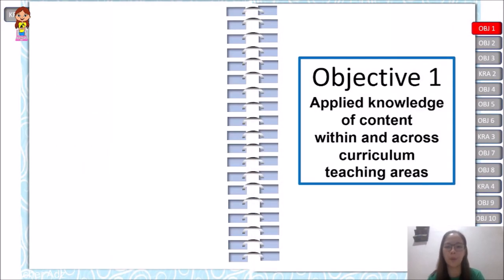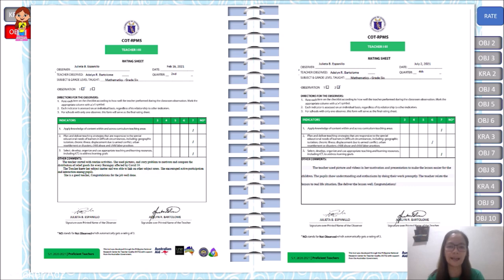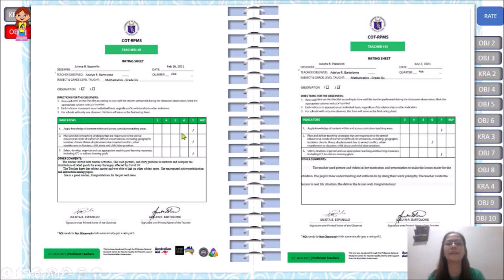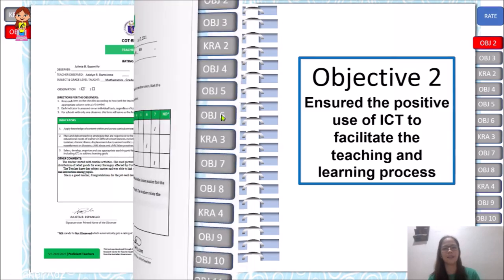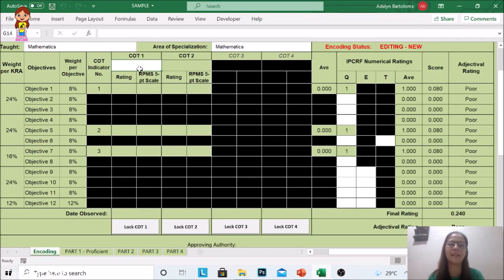For objective number one, Applied Knowledge of Content within the Cross-Curriculum Teaching Areas, ang ating lang pong ilalagay ay ang ating dalawang rating sheet. Nilagay ko ang aking dalawang rating sheet. May rating po sa aking first observation, seven lahat ang indicators one, two, and three. Dito naman sa second observation, seven, six, and seven.